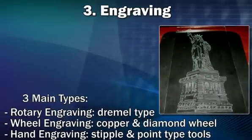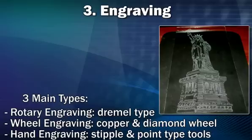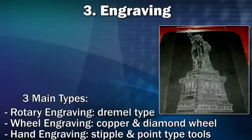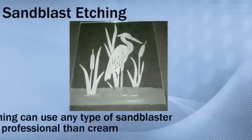Engraving is a category I use to classify all types that involve a tool coming in direct contact with the glass. The three types of engraving are rotary engraving, wheel engraving, and hand engraving. Rotary engraving — probably the most popular — uses a Dremel-type tool to grind into the glass. Wheel engraving uses copper or diamond wheels to cut into the glass. Hand engraving uses a scribe-type tool, with two key processes: stipple and point engraving.